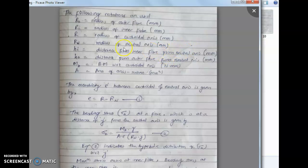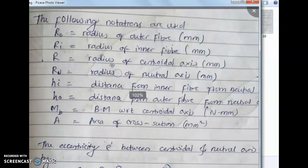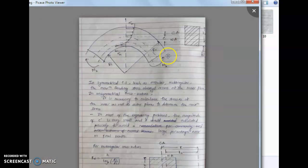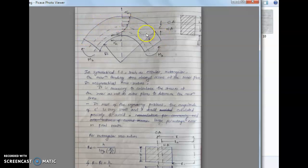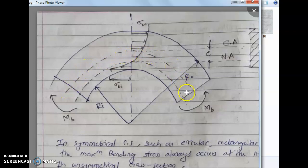Now we will see the derivation for bending stresses in a curved beam. The following notations are useful. R_O is the radius of the outer fiber. This is a curved beam having inner radius R_I and outer radius R_O. The central axis and neutral axis are distinct — for a curved beam, the neutral axis is shifted towards the center of curvature. The central axis depends upon the geometry of the cross-section, while the neutral axis depends upon bending and the radius of curvature.